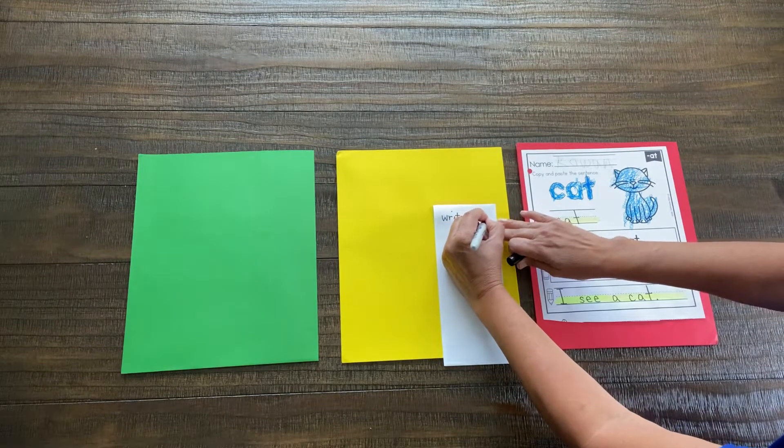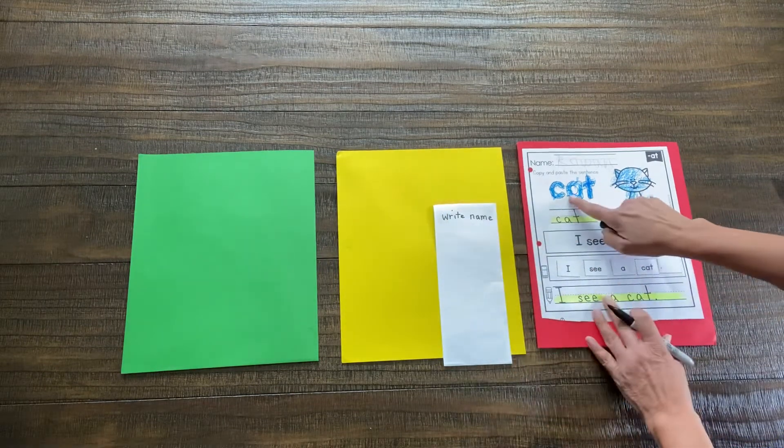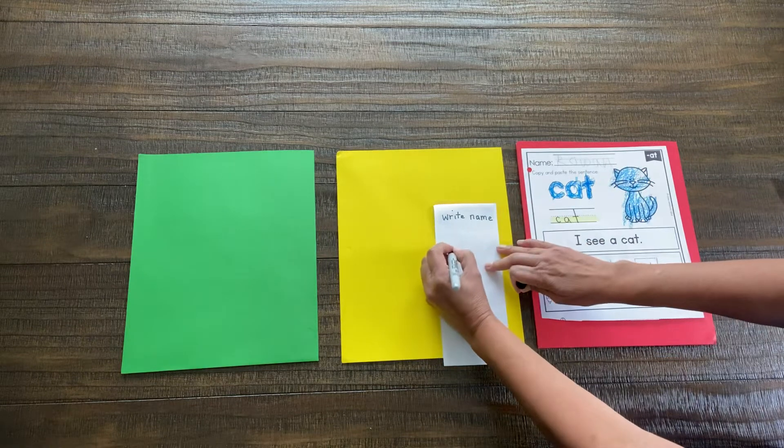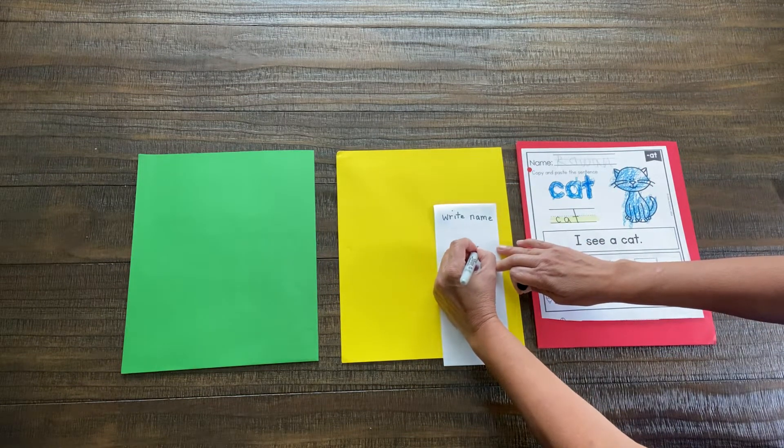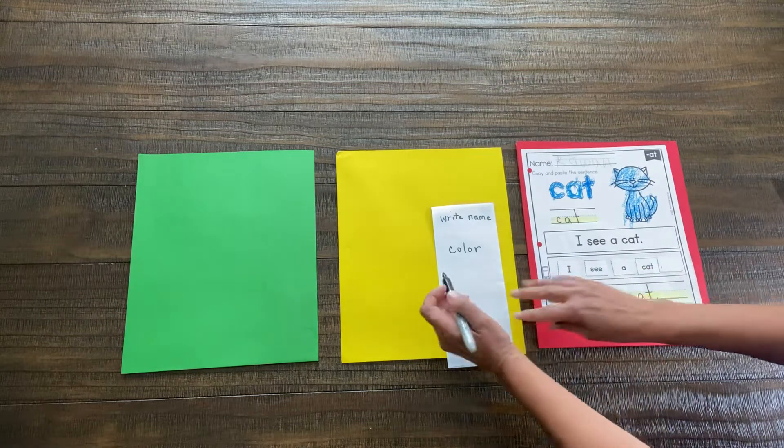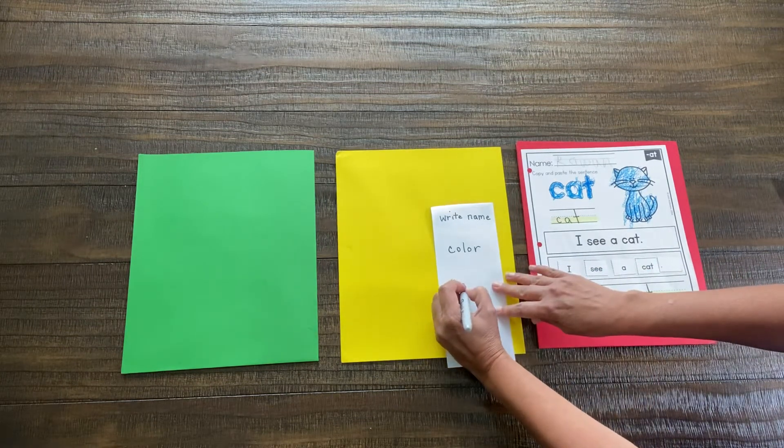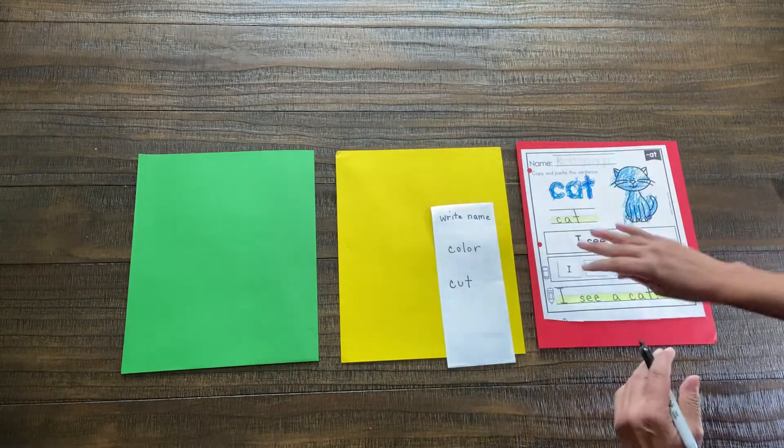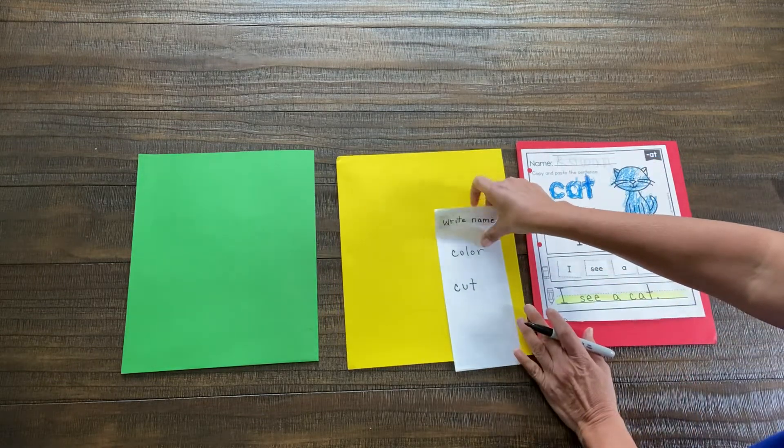The next thing we have to do is what? Color. Then we're also going to have to cut. Now, of course, you want to go through each step that has to be done, but I'm just doing this as an example.